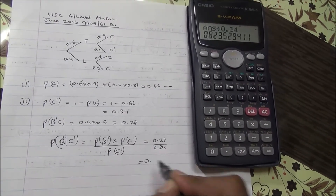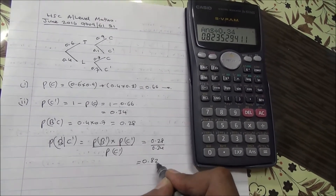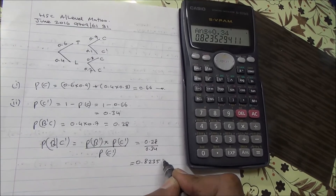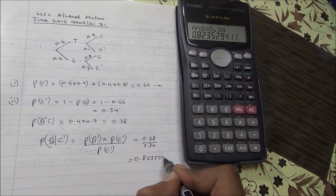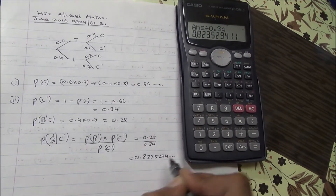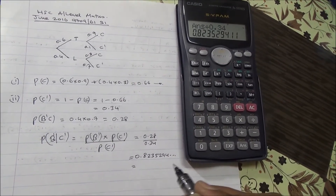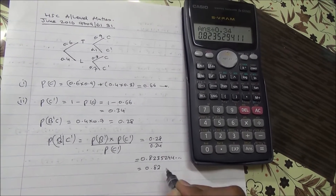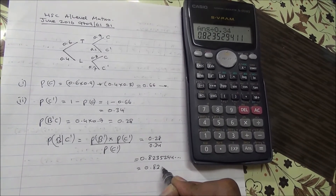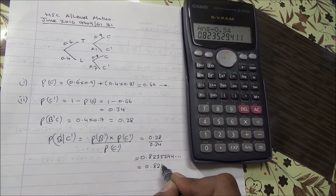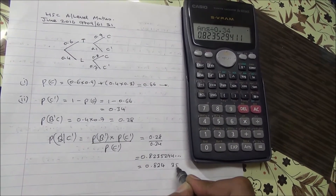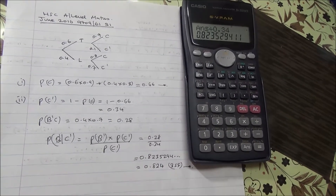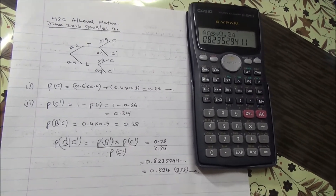So 0.8235294 and so on. Therefore, the answer is 0.824 to three significant figures. Here we are for this question. Take care.